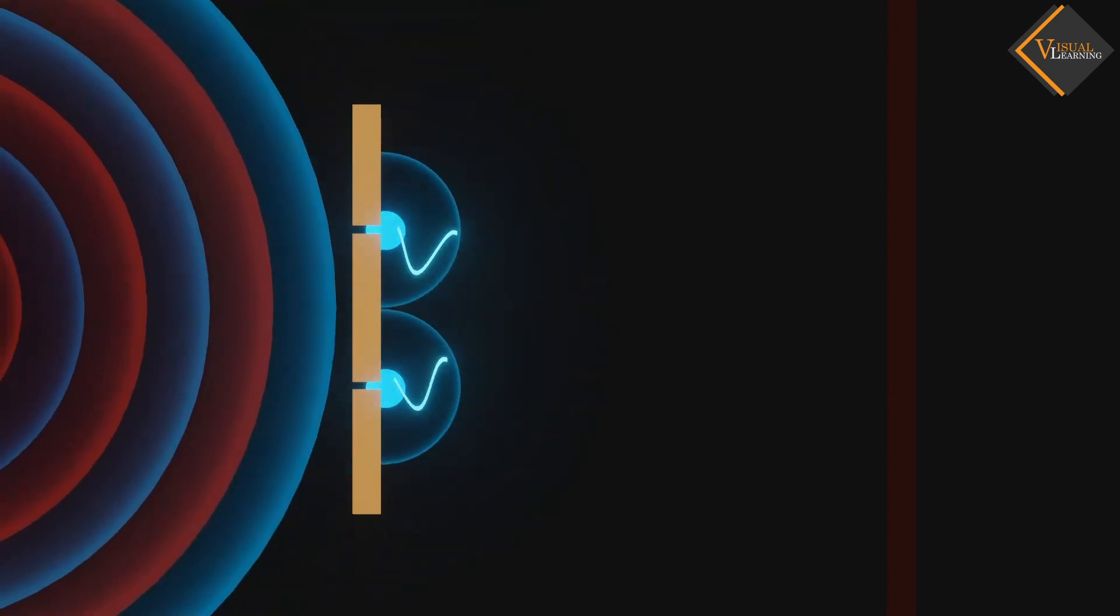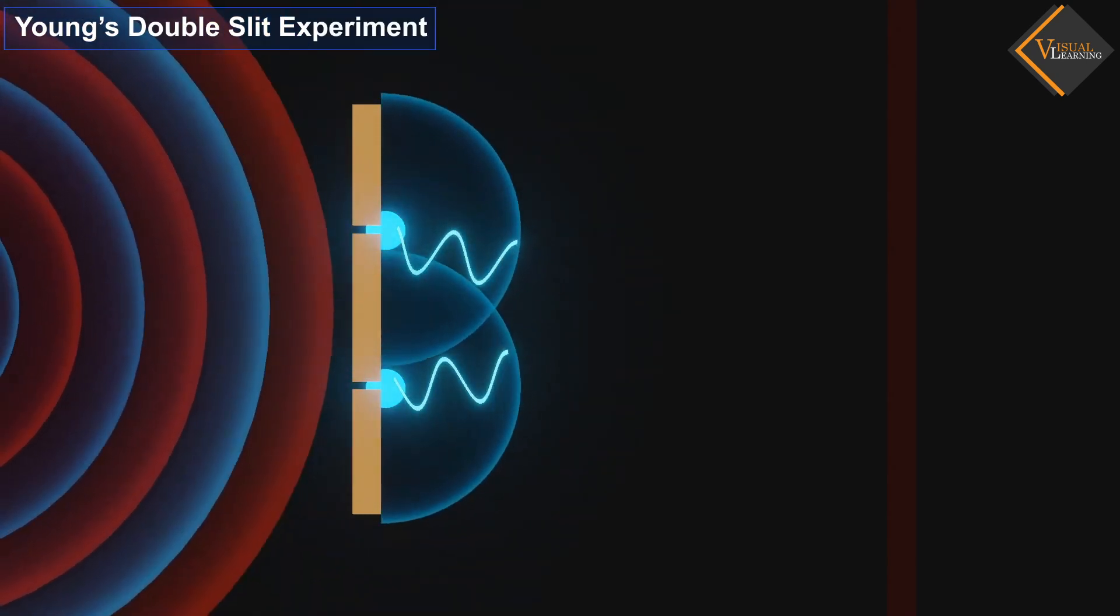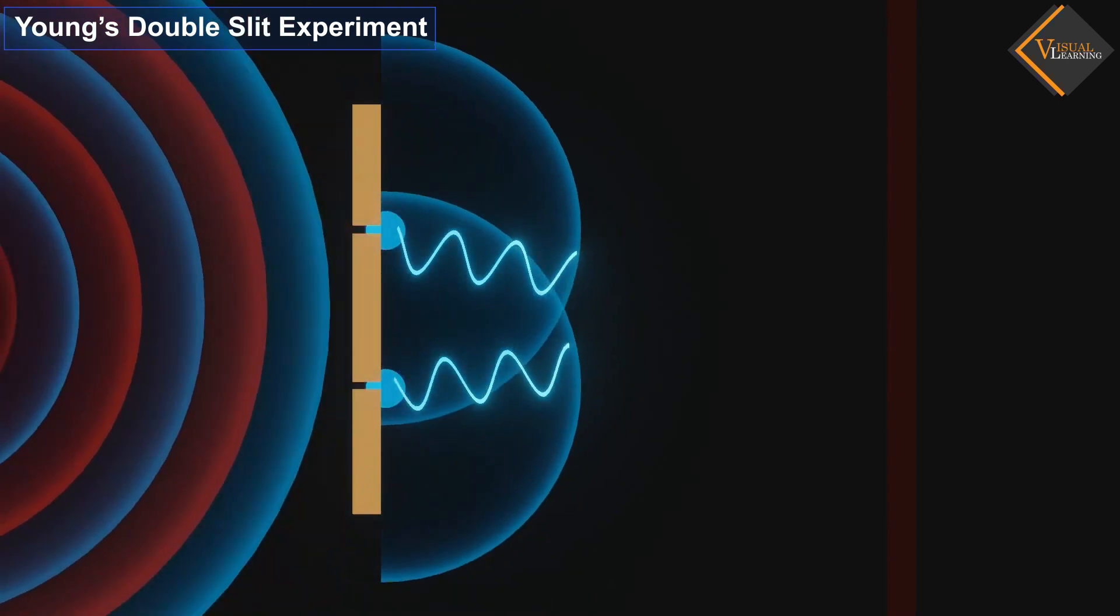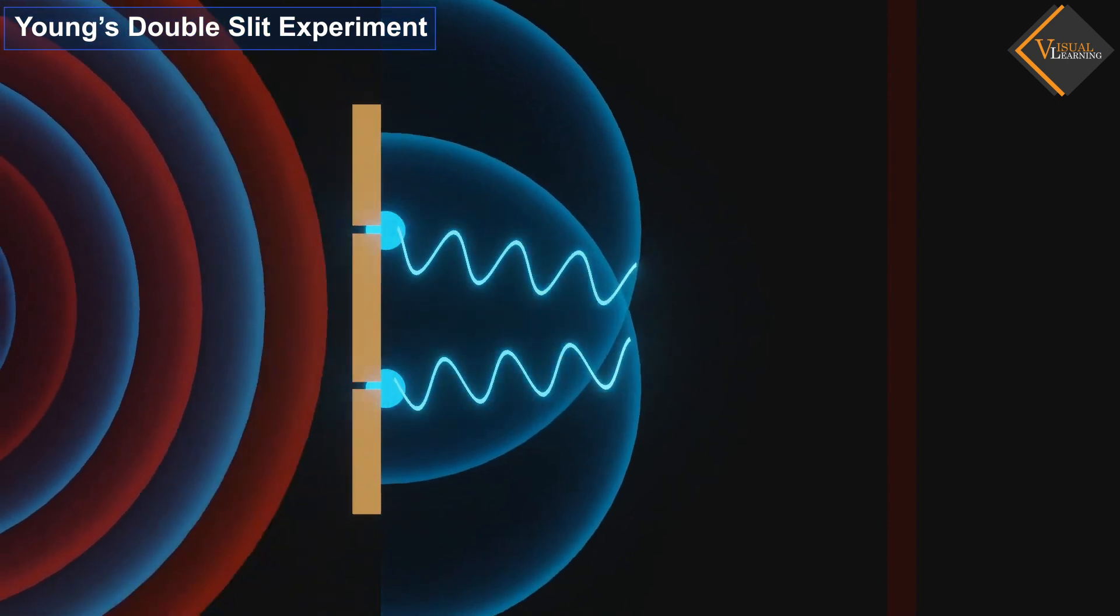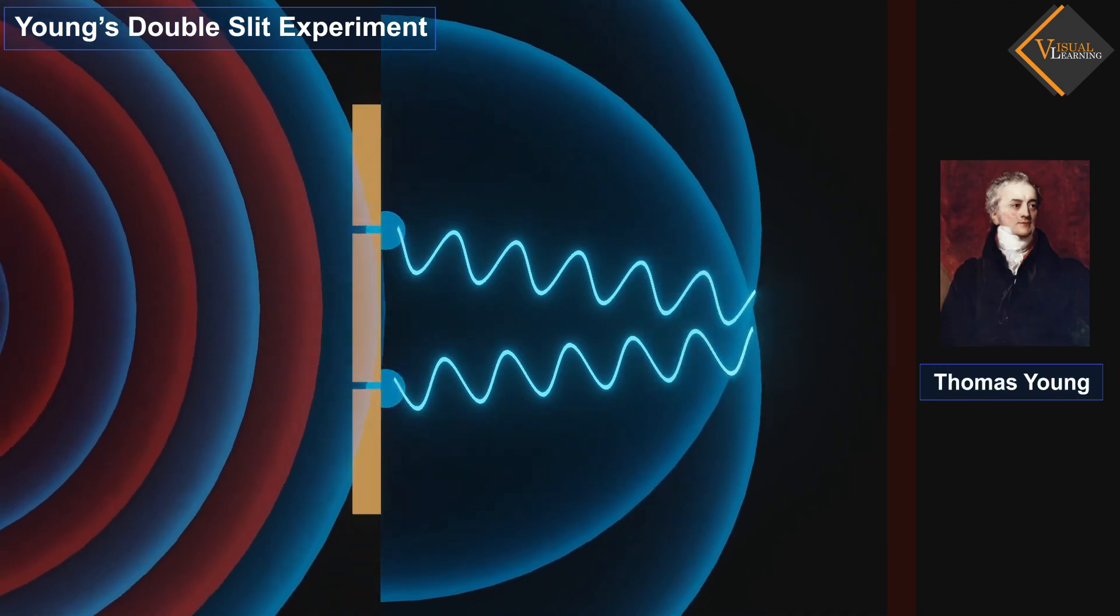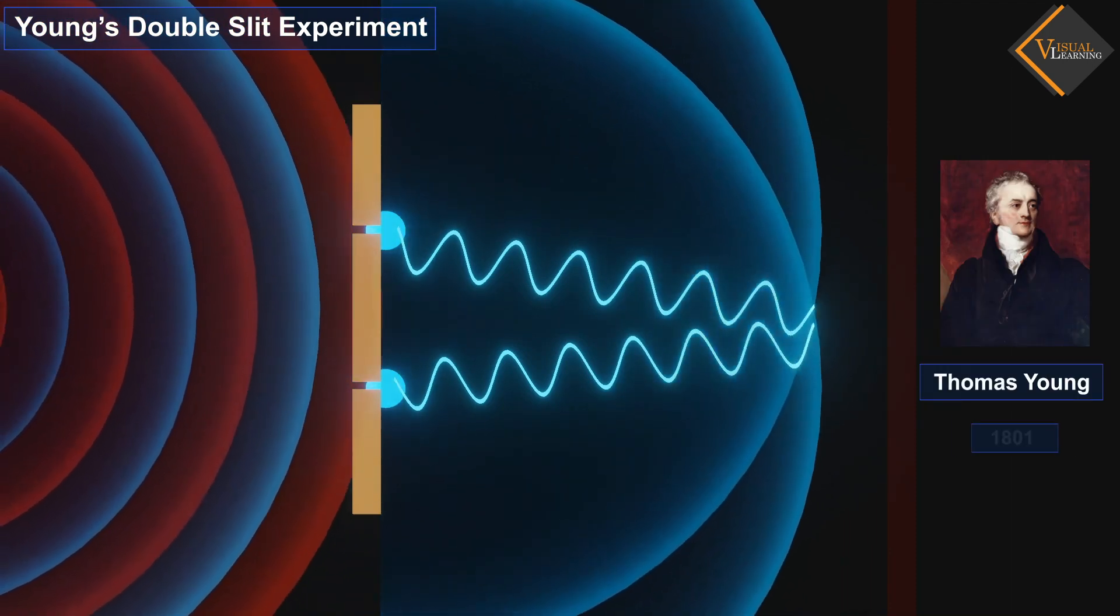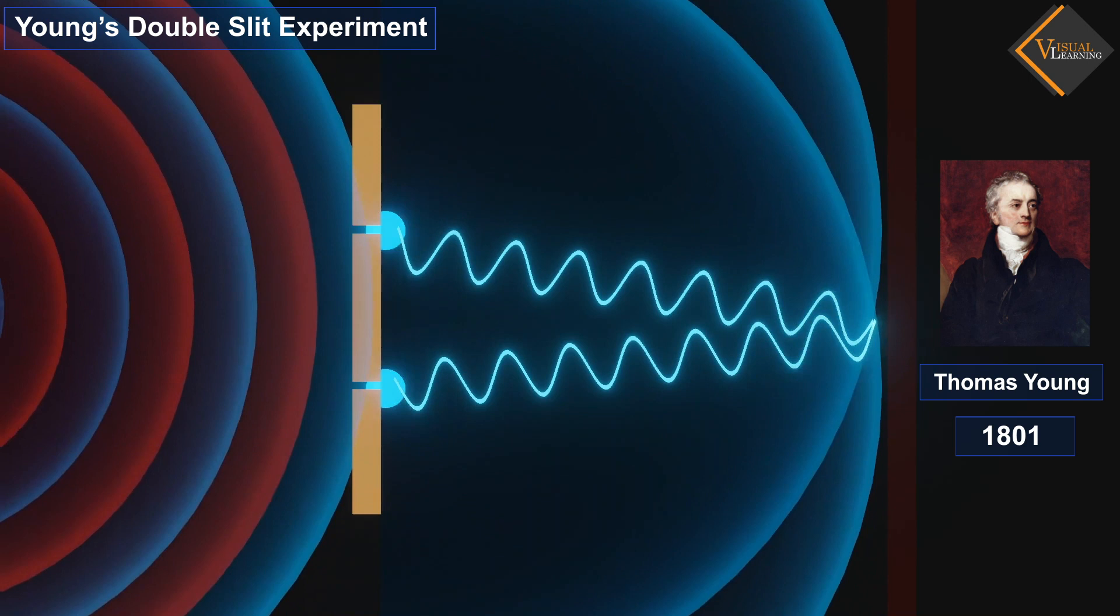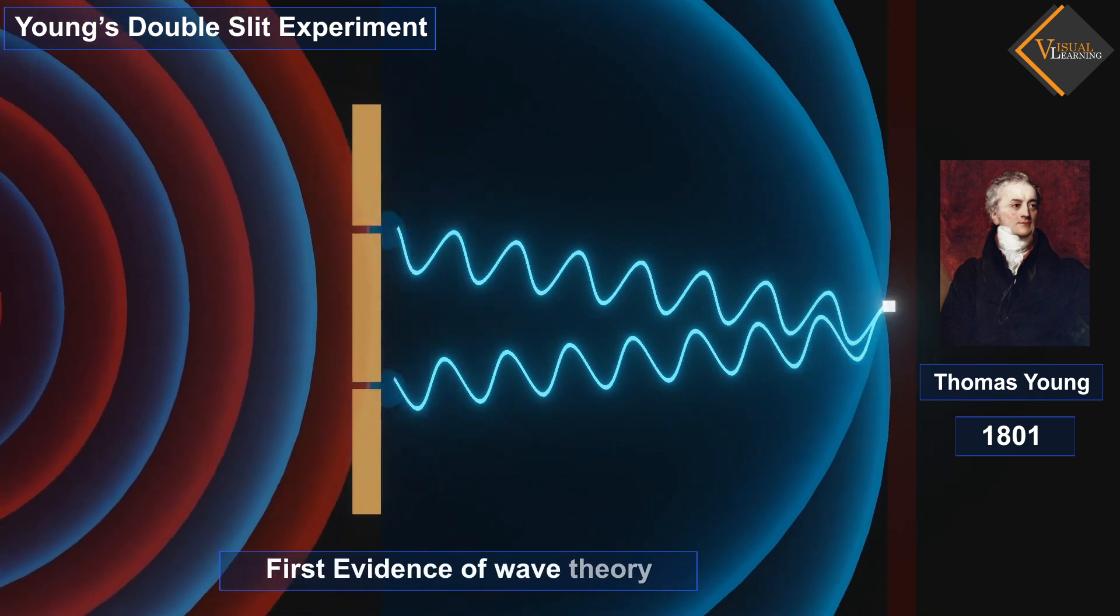In this video, we will understand Young's double-slit experiment. The experiment is a remarkable one that reveals the wave nature of light. Thomas Young performed this experiment in 1801 and it served as the first evidence for wave theory.